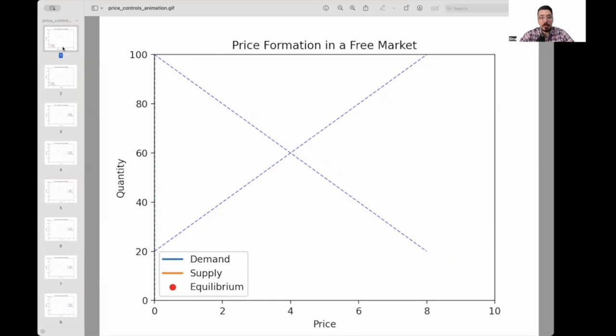So let's say we begin market action at the price of zero. Imagine a product is just being introduced. And at the beginning, we don't know what price is appropriate. So let's begin at zero. At zero, there's very little production incentive. So you see that supply is at 20, a very low number.